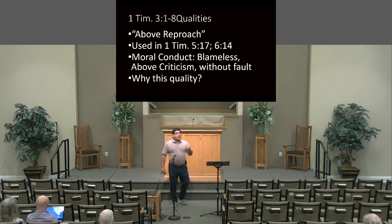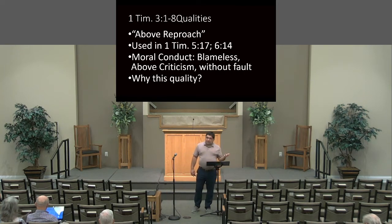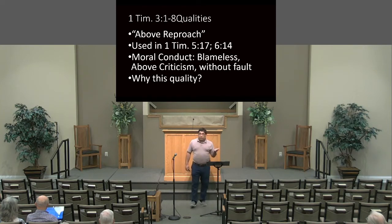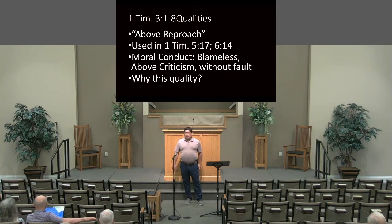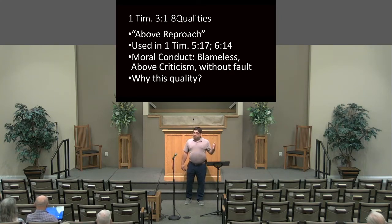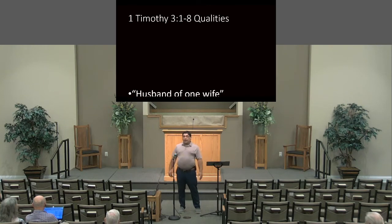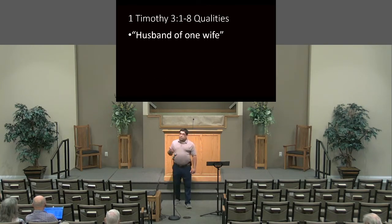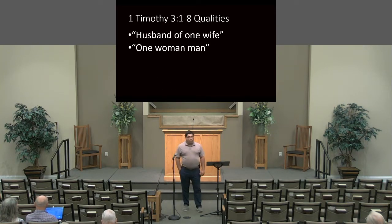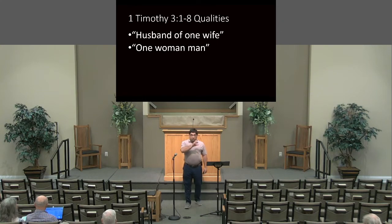The next one is the husband of one wife. Depending on what commentators you read, some would say that this is actually the only quality, and that everything else is kind of an example of what 'above reproach' is or is not. I don't espouse to that, but I throw it out for your consideration. So 'above reproach' — that's number one — but right off the bat, the very next one is 'the husband of one wife,' which literally means a one-woman man. That is literally what it means in a wooden, rigid translation.